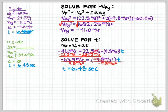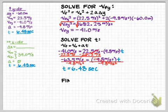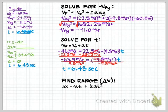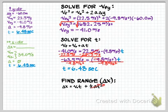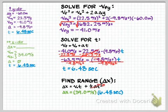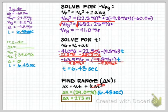Now I have three pieces of information in the x direction and can find the range — delta x. Using delta x = vx times t (since acceleration in x is zero, that term drops out): delta x equals 39 meters per second multiplied by 6.48 seconds. The seconds cancel, leaving meters, and you get 273 meters. That is how far away the cannonball lands from the base of the cliff.